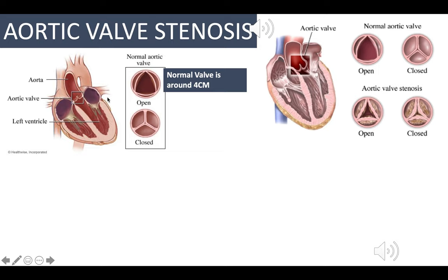In this situation, with a stenotic, fibrotic, sclerotic valve, the blood in the left ventricle is trying to push blood through. The pressure gradient will eventually increase, and the pressure in the left ventricle will be greatly increased compared to normal. Therefore, the myocardium has to work much harder to push blood out into the extremities.